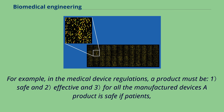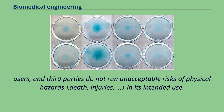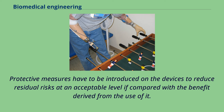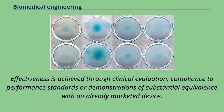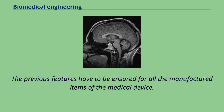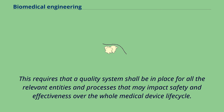In medical device regulations, a product must be: (1) safe, (2) effective, and (3) consistently manufactured. A product is safe if patients, users, and third parties do not run unacceptable risks of physical hazards in its intended use. Protective measures have to be introduced to reduce residual risks to an acceptable level. A product is effective if it performs as specified by the manufacturer in the intended use. Effectiveness is achieved through clinical evaluation, compliance to performance standards, or demonstrations of substantial equivalence with an already marketed device. A quality system shall be in place for all relevant entities and processes that may impact safety and effectiveness over the whole medical device life cycle.